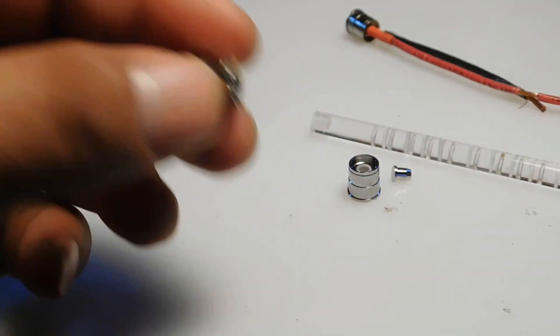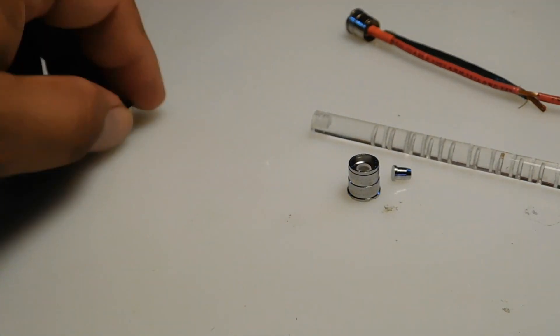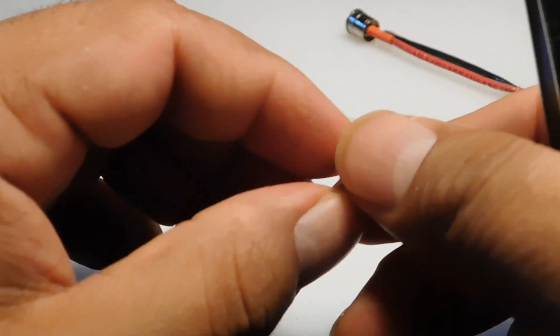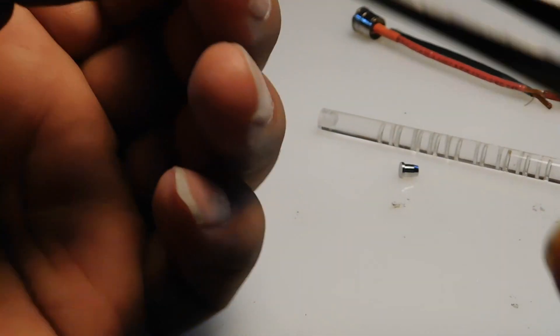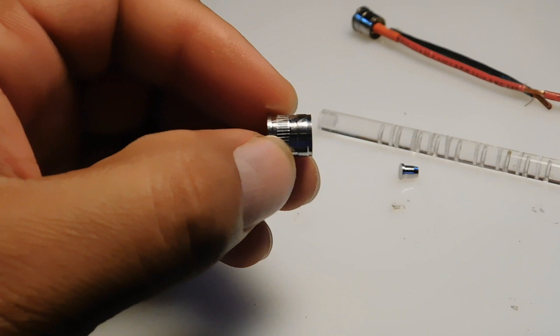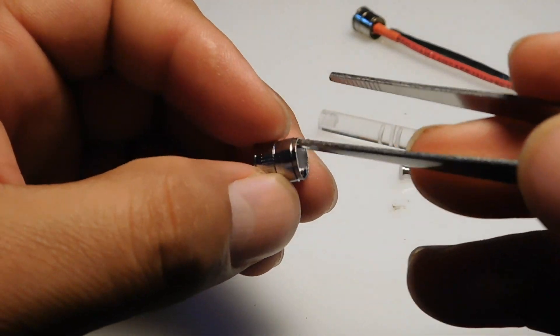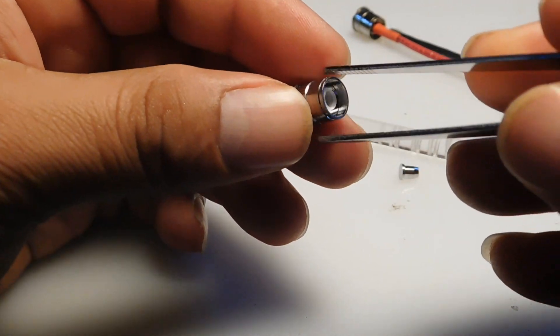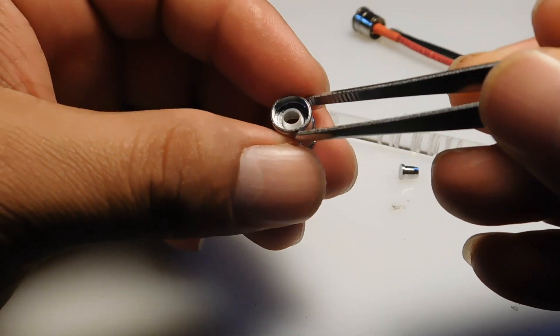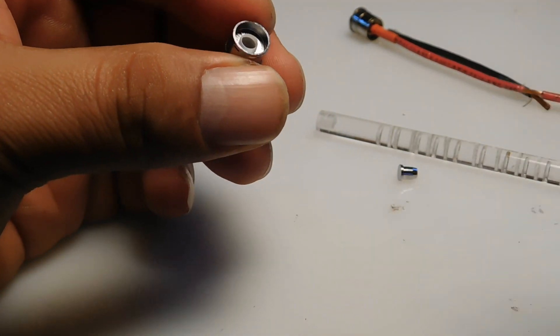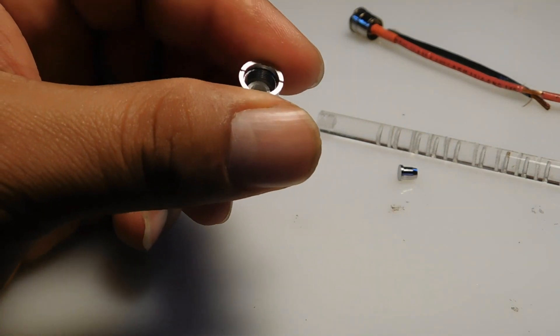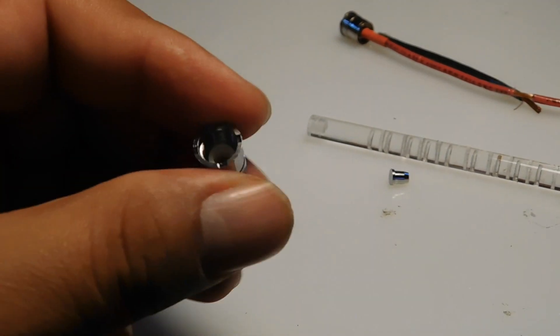When you solder the wire to the housing right here, you have to be quick. Because if you heat up this too much, this gasket is going to melt. And whenever you put this back, you might have some problems. So you got to be careful.